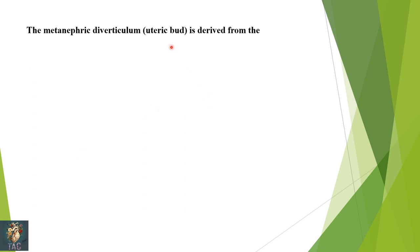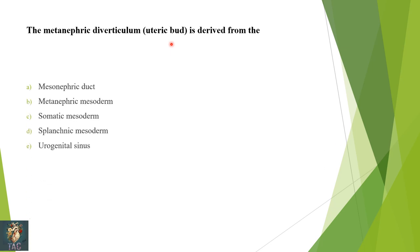Next: the metanephric diverticulum, the ureteric bud, is derived from — the mesonephric duct, metanephric mesoderm, somatic mesoderm, splanchnic mesoderm, or urogenital? A hint is present in the stem: the metanephric diverticulum is derived from the mesonephric duct.